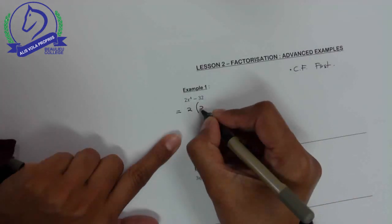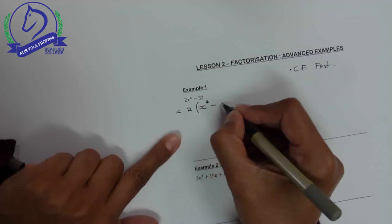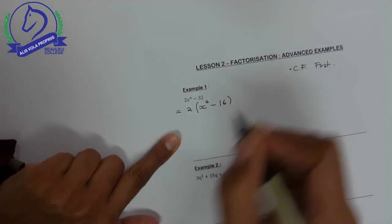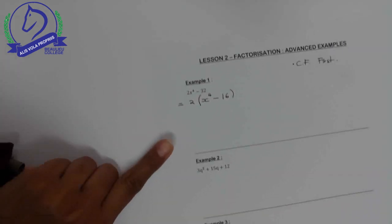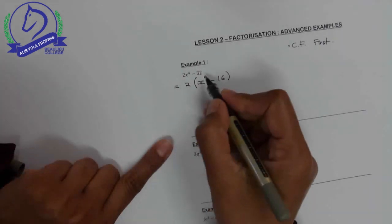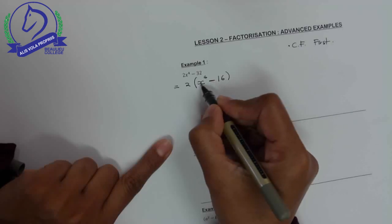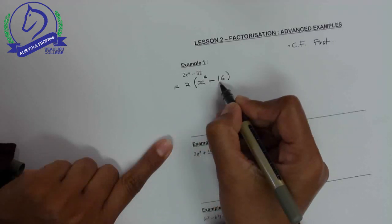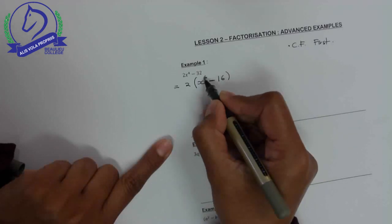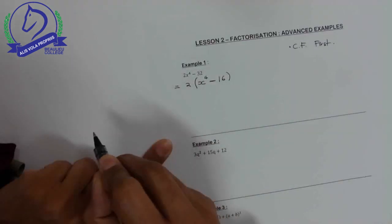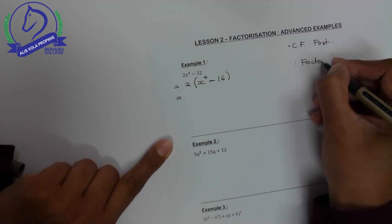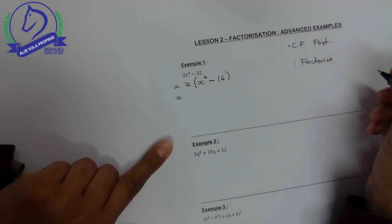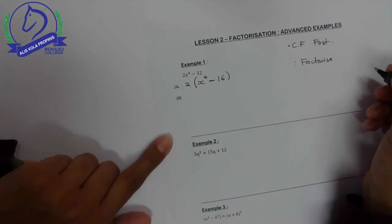Do I stop here? No. You can clearly see that inside the bracket there's difference of two squares. 16 is a perfect square and the even power tells you that it's a perfect square, so you've got to factorize further. Remember, I will upload these notes for you so you don't have to take down notes, just listen.